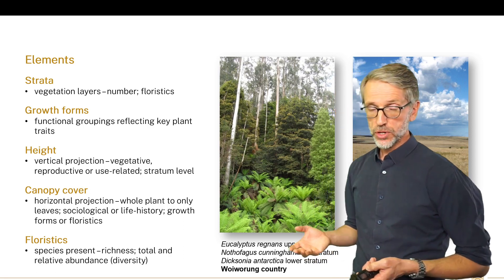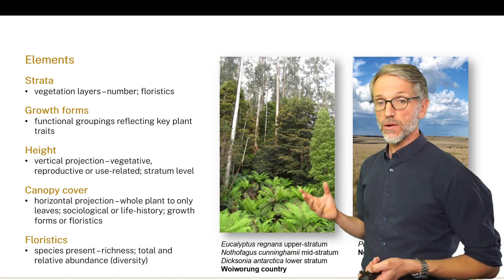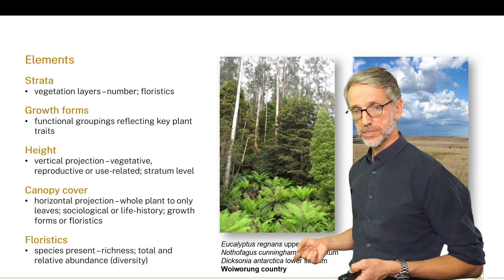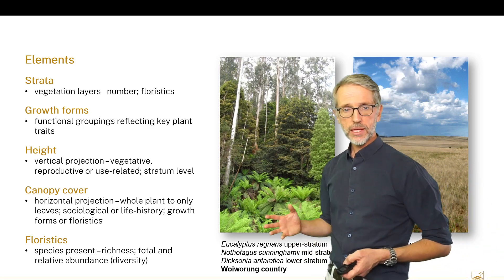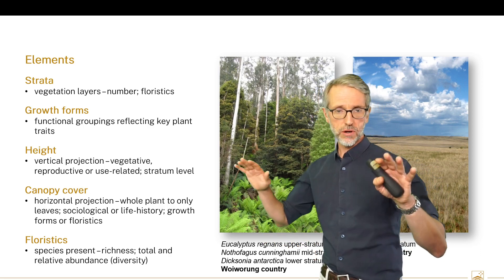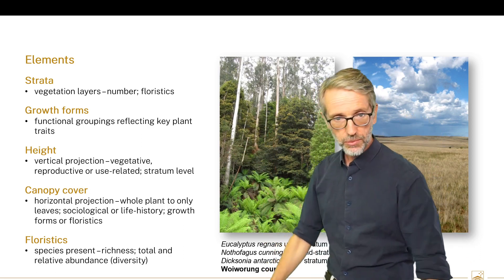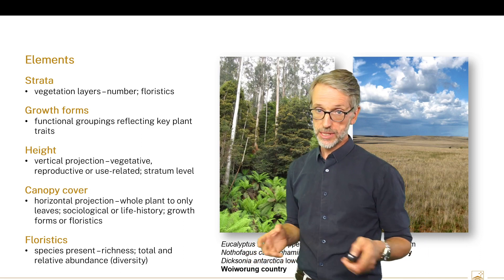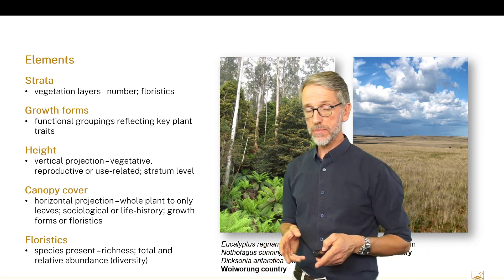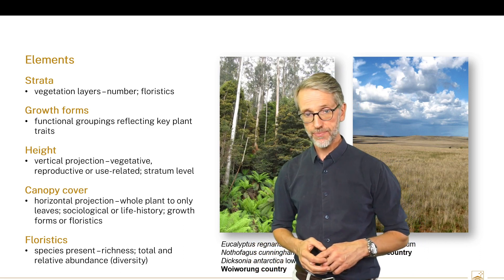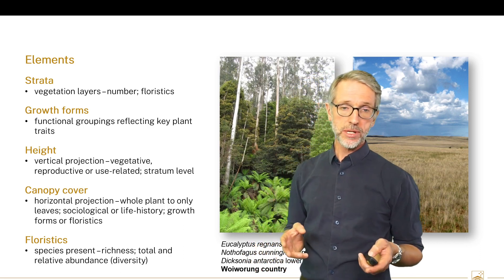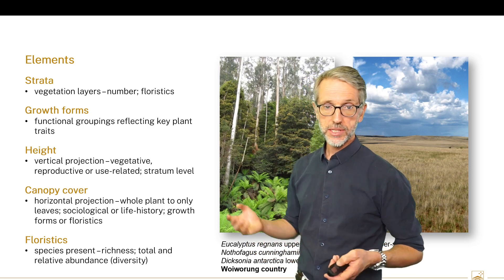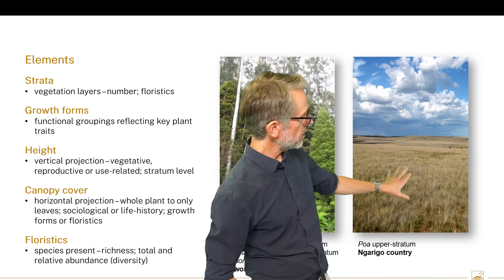Within that stratum, we also briefly describe what growth forms constitute it — a functional grouping that helps us understand the nature and processes of the dominant stratum. Height is the vertical projection above the ground, though there are different measures of vegetation height that may apply depending on the circumstance. Canopy cover is the horizontal projection of the upper stratum canopy onto the ground, and there are a number of different canopy cover metrics we might apply within the NVIS. The last component is the floristic component — the dominant stratum genus.